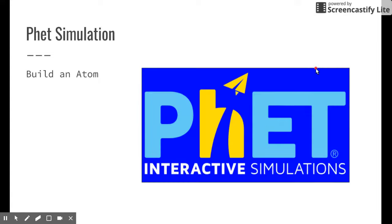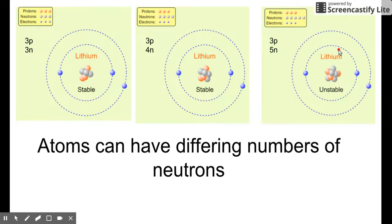We've done a PhET simulation before. It's called Building an Atom, and I highly recommend you go play with it at some point. You can actually put in electrons, protons, and neutrons and see what they do. So here's an example of that simulation. I just took a few screenshots. Here are three different lithium atoms with different numbers of neutrons. Notice all of them have the same protons. This one has three protons, three protons, three protons. They're all lithium atoms because that's the identity.